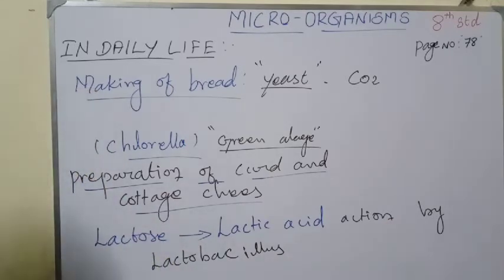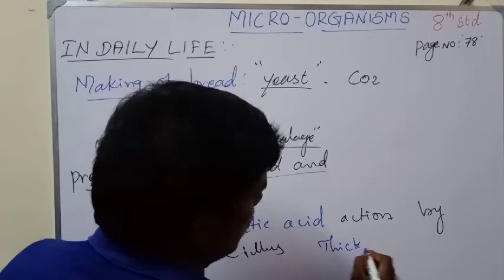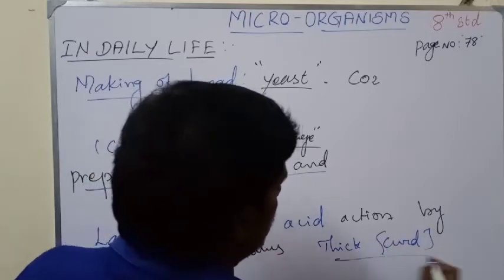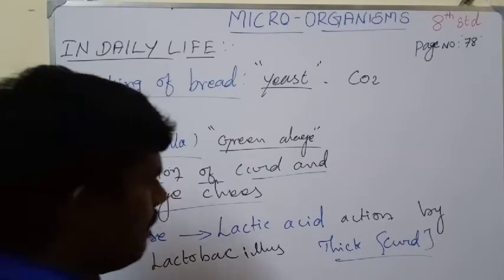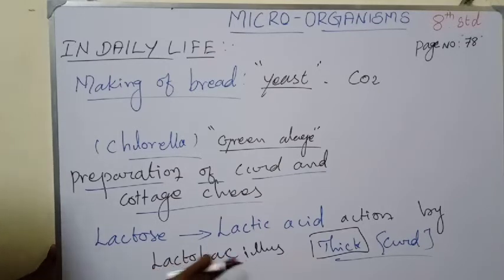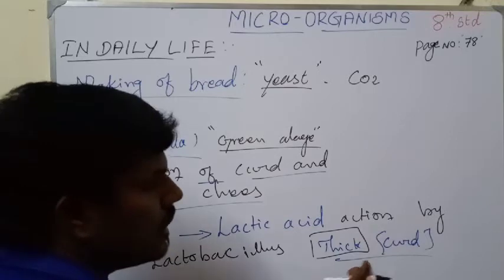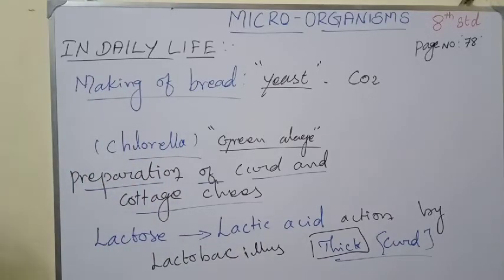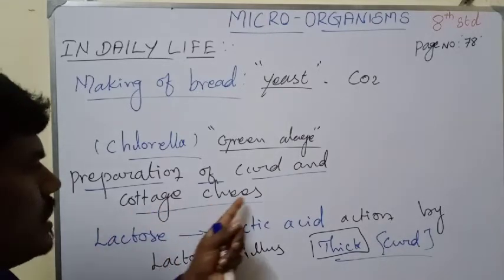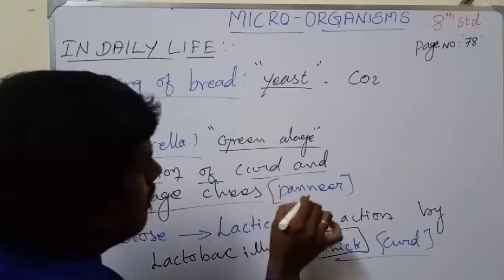When milk is converted to curd, it becomes thick. The curd, having thickness, is the result of the action of Lactobacillus converting lactose into lactic acid. When this curd is further processed, we get cottage cheese, which is also called paneer.